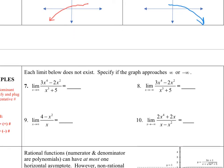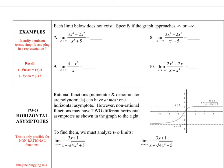In this next part, we're given four limits to evaluate, and in each one the limit does not exist — each one has a dominant numerator. But instead of just saying DNE, we're going to get more precise and say whether that non-existent limit means the graph approaches infinity or negative infinity. The way we do that is: first identify the dominant terms in the numerator and denominator, simplify algebraically, and then plug in a representative large or small number and analyze what's happening.